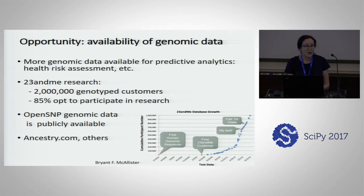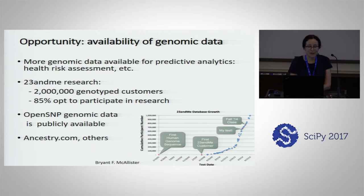Also there's OpenSNP, a genomic database that is publicly available. 23andMe is not publicly available, but you can apply to do research with them, and Ancestry.com and others are also sources of genomic information.